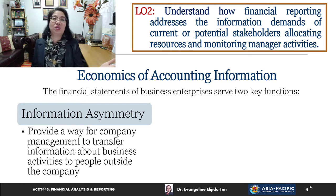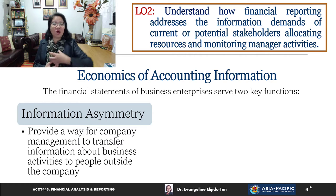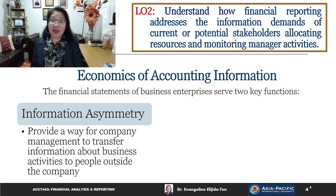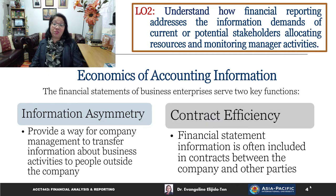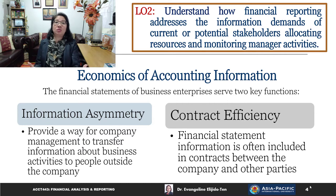If all interested users have similar information provided to them, then there is information symmetry. Financial statements provide a way for companies' management to transfer information they have about business activities to people outside the company, thereby reducing information asymmetry. Another key function of financial statements is contract efficiency — financial statement information is normally included in contracts between the company and other parties because those parties would like to be well informed about the overall performance of the company.